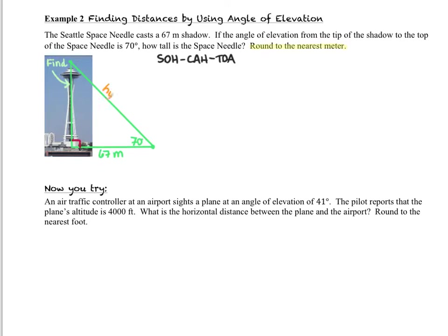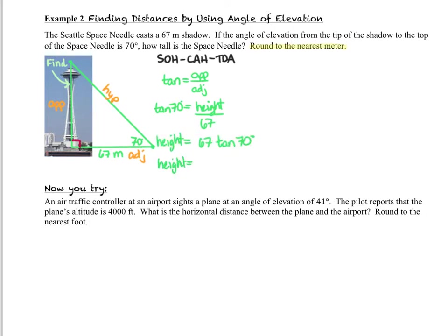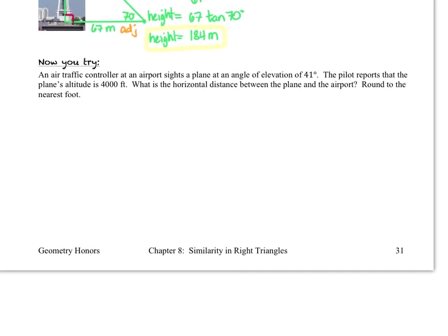We can now label our right triangle with hypotenuse, adjacent, and opposite. Since we have the adjacent and we want the opposite, we're going to use the tangent of the 70-degree angle. The tangent of 70 degrees is equal to opposite over adjacent, so that means it's going to be the height over 67. To solve for height, we multiply both sides by 67, and that gives us a final height to the nearest meter of 184 meters. Next, you have a Now You Try — start by drawing your right triangle and labeling it. See you back in a minute when you're ready to check your work.